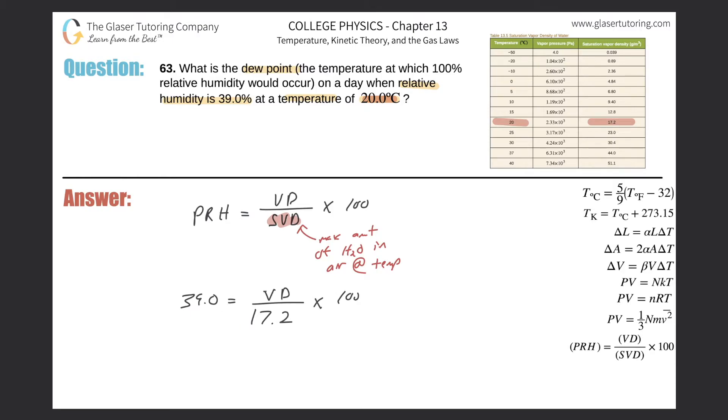Solving for the vapor density, you simply do a cross multiplication and then divide out the 100. So this becomes the vapor density is 39 times 17.2 divided by 100, and this becomes 6.71.